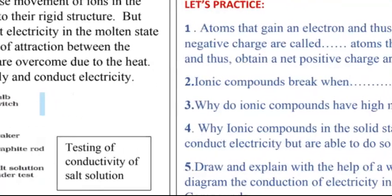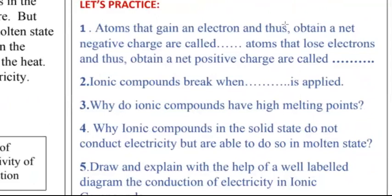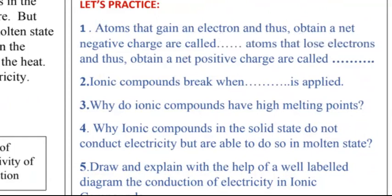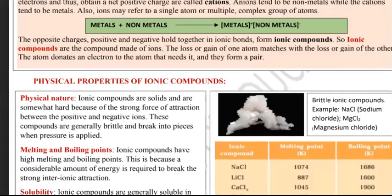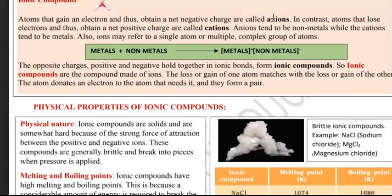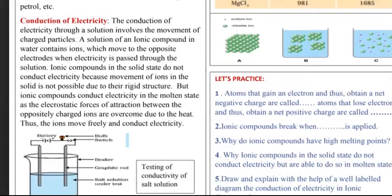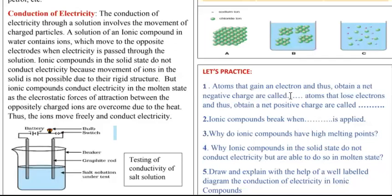Now let's see your questions quickly. Question 1: Atoms that gain an electron and thus obtain a net negative charge are called dash. Question 2: Atoms that lose electrons and thus obtain a net positive charge are called dash. If the net charge is negative, it will be an anion; if the charge is positive, it will be a cation.